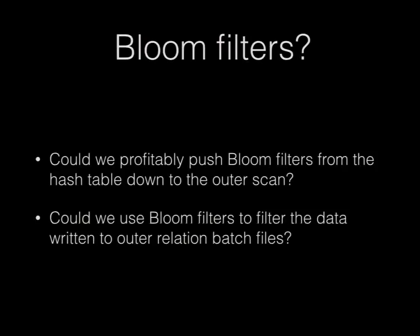Peter Geoghegan also had the idea that you could use bloom filters to filter the data you write out to outer relation batch files, preventing a bunch of disk IO. Bloom filters in general may not speed up small, optimal hash joins, but they might still prevent very expensive disk IO in larger cases. Peter correctly notes that bloom filters only save you cycles if they actually filter stuff out — otherwise they just cost cycles for nothing.